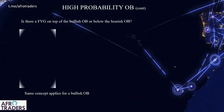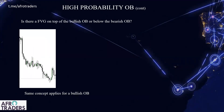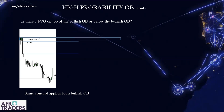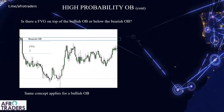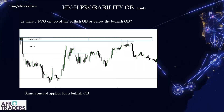You also want to consider order blocks that have a fair value gap below them or above them. If you're looking at a bullish order block, you want to see a fair value gap above it. If you're looking at a bearish order block, you should see a fair value gap below it. In this case, this is the last bullish candle in this area and it has a big void below it — a fair value gap. We mark the void, price attempts to fill it, trades into the order block, and then you see a drop.